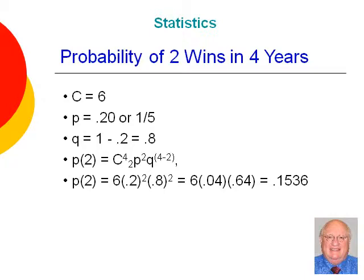So, here we have plugged the numbers into the formula, and we learn that the probability of the Giants winning the division two years out of four is 0.1536.